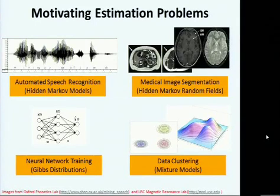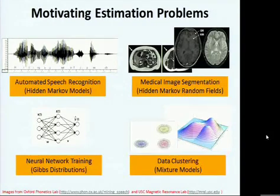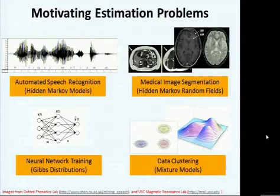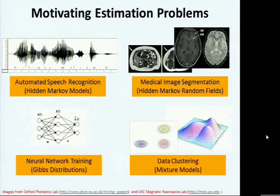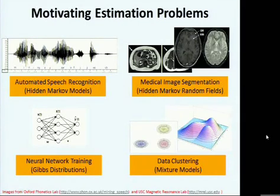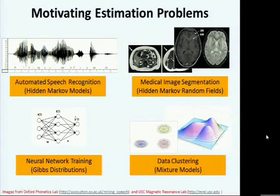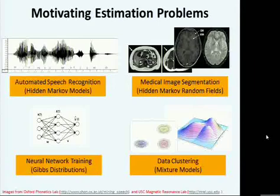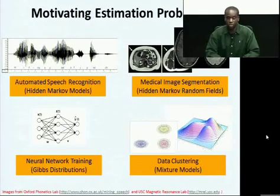First of all, we'll talk about the areas of application we're working with. We're working with automated speech recognition for hidden Markov models, which we train with Baum-Welch algorithms. We're trying to train these faster because right now it takes about a week to train an industrial-class speech recognizer. We're also working with medical image segmentation, trying to separate water from fat in MRI and PET scans. We're also working with neural network training using back propagation on Gibbs distributions, and with mixture models, trying to cluster data into different subpopulations.